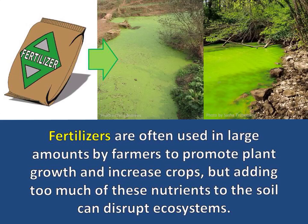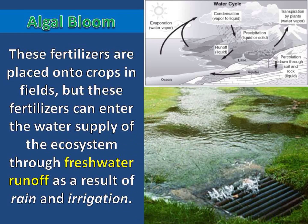Fertilizers are often used in large amounts by farmers to promote plant growth and increase crops, but adding too much of these nutrients to the soil can disrupt ecosystems. These fertilizers are placed onto crops and fields, but they can enter the water supply through freshwater runoff as a result of rain and irrigation.